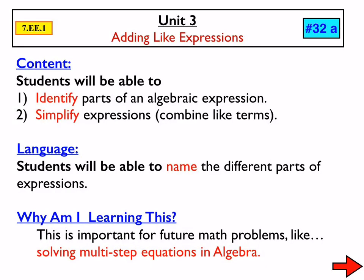Today, lesson 32a: adding like expressions. Our focus will be on identifying parts of an algebraic expression, in addition to simplifying expressions — sometimes we call that combining like terms — and naming the different parts of expressions. Yesterday our focus was on the important properties of mathematics, including the identity property for equivalent fractions and inverse properties for solving equations, which is coming up very soon. But today: adding like expressions.